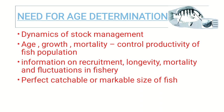To know the dynamics of a population of any target species, fisheries scientists rely on fish population models to understand stock health and make appropriate management decisions. Age, growth, and mortality are the three major population characteristics controlling the productivity of a fish population. Information on recruitment, longevity, mortality, and fluctuations in fisheries are also important concepts derived from age and growth data.